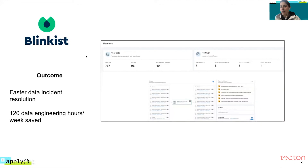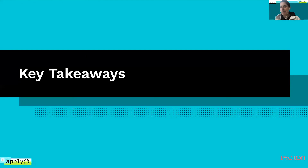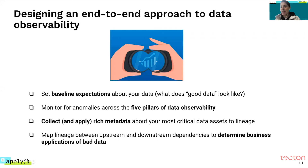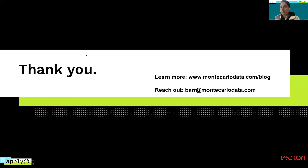Thinking about data observability starts with setting baseline expectations about your data — what does actually good data look like? Consider the five pillars of data observability and how they apply to your business, and how the overall view provides context along with rich metadata about your most critical data assets. Thank you so much — it was a pleasure seeing you all, and feel free to reach out with any questions.